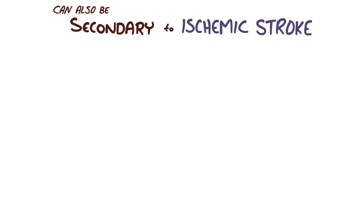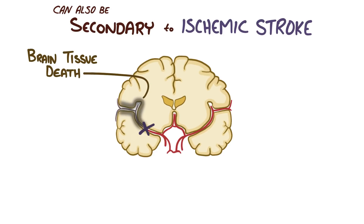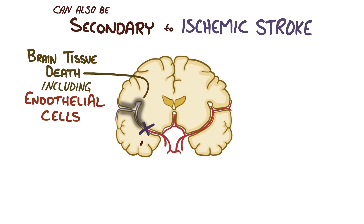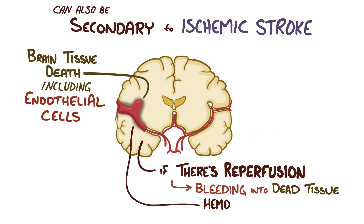Intracerebral hemorrhage can also be secondary, arising after an ischemic stroke. An ischemic stroke is caused by a blockage of blood flow to a part of the brain, and within hours it usually leads to brain tissue death. Arteries within the ischemic tissues are themselves made up of endothelial cells that die off, meaning that if there is reperfusion or a return of blood flow, there is an increased chance that the damaged blood vessels might rupture, causing a hemorrhage. If this happens, there is bleeding into dead tissue, and it is called a hemorrhagic conversion.